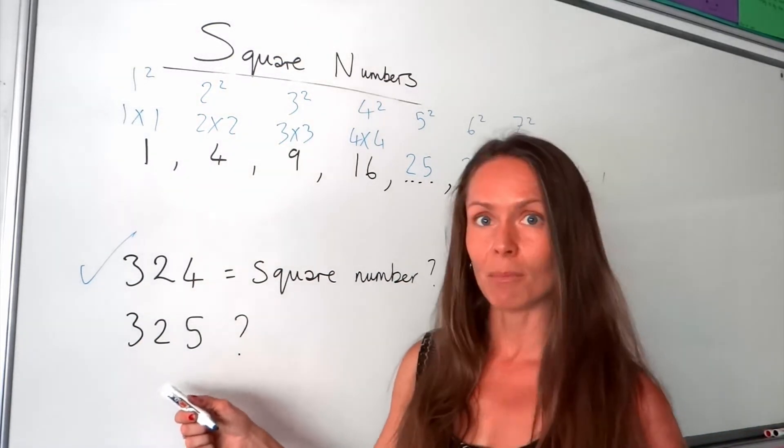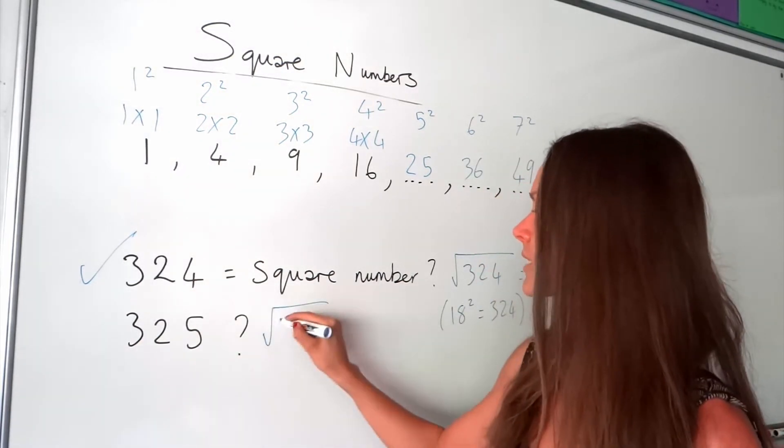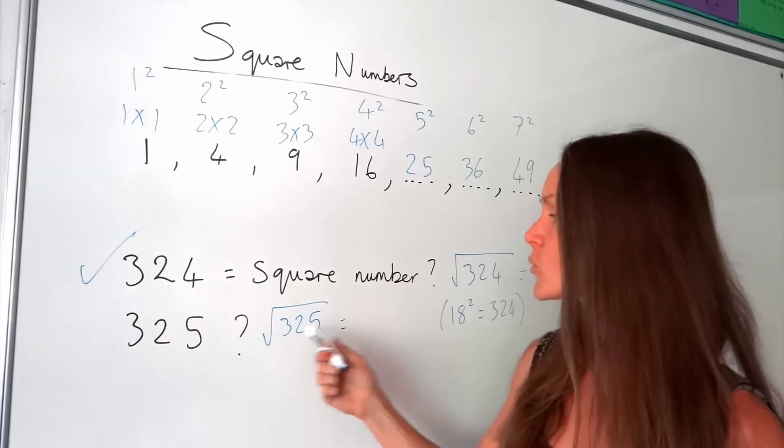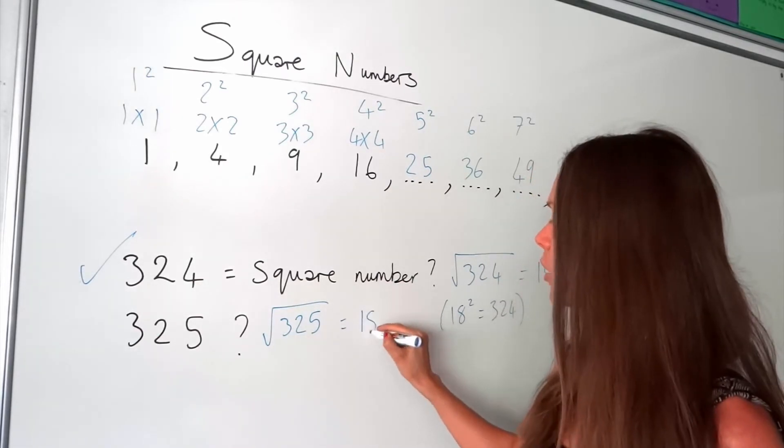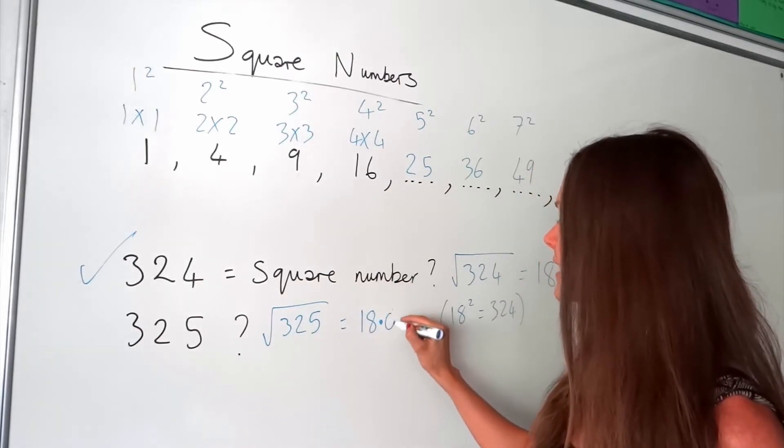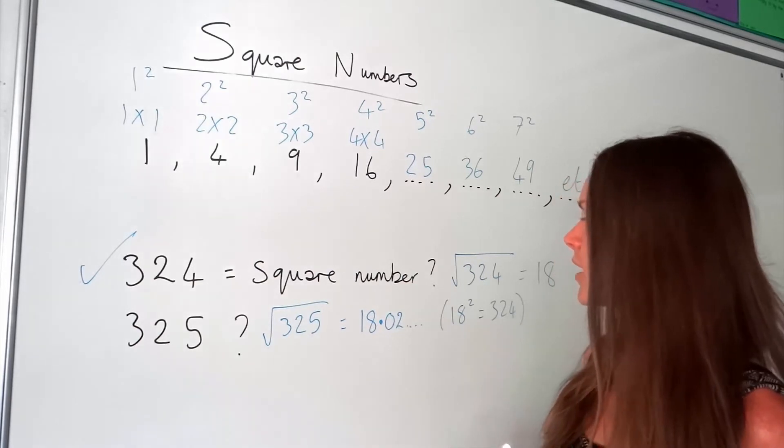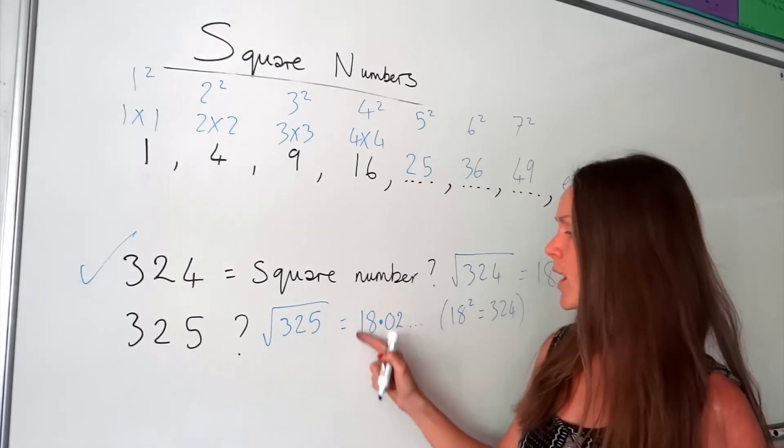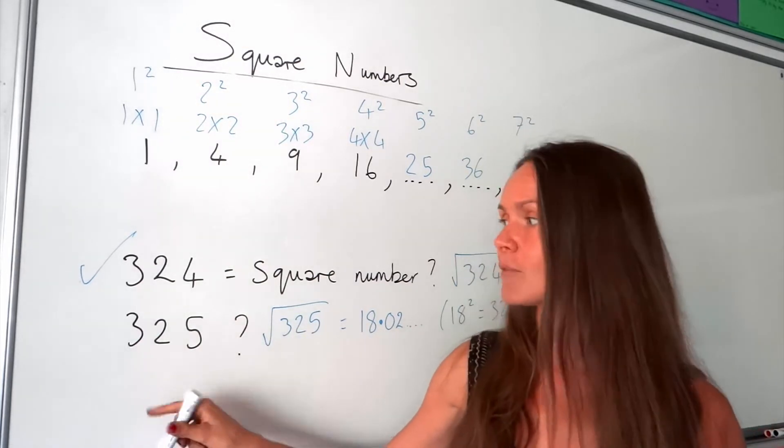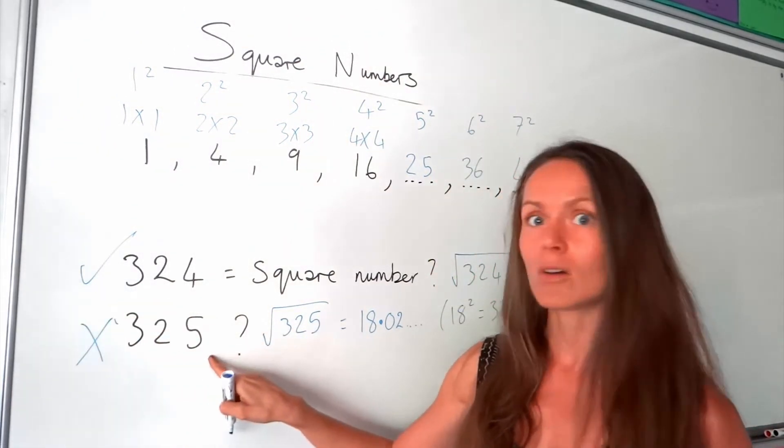But if we put this number in the calculator, this time it's a different story. This time when we square root the number, we don't get a whole number. We get something like 18.02. So we're not squaring a whole number to get 325, so that one is not square.